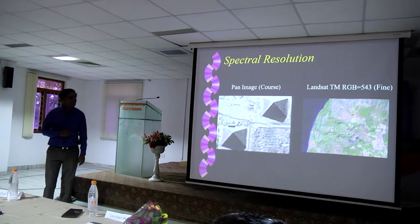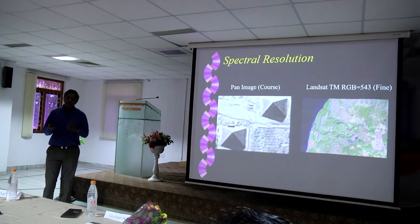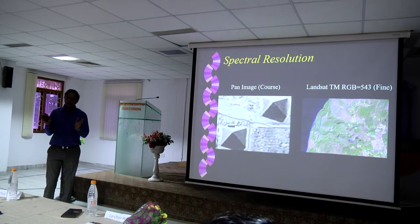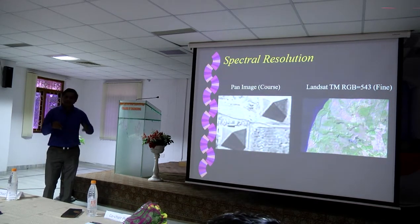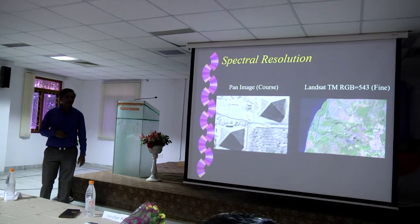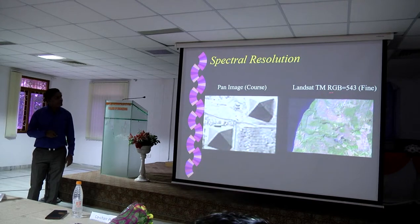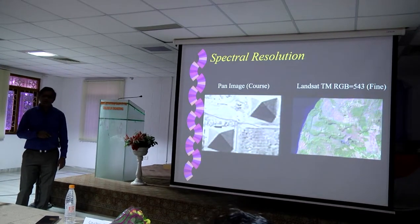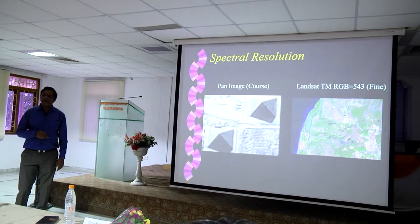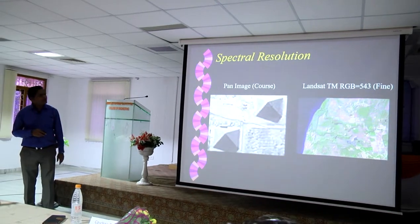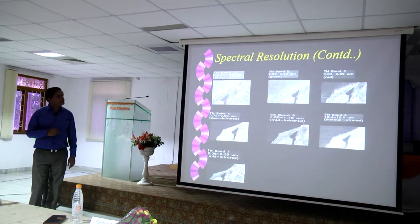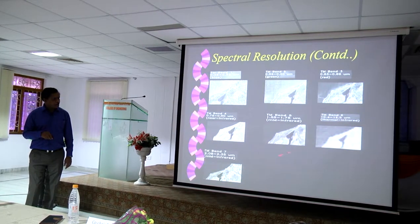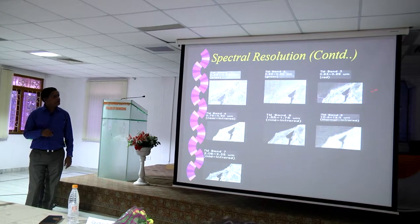The next aspect equally important is spectral resolution. For example, if you have one image covering the entire visible region from 0.4 to 0.7 micrometers, that is a panchromatic image. But if you try to slice that into many spectral bands, you can have multispectral images with very fine spectral resolution — for example, 0.3 or 0.1 micrometer spectral resolution. We can talk about multispectral images like those from Landsat, where you can see how the same region looks in different wavelengths.